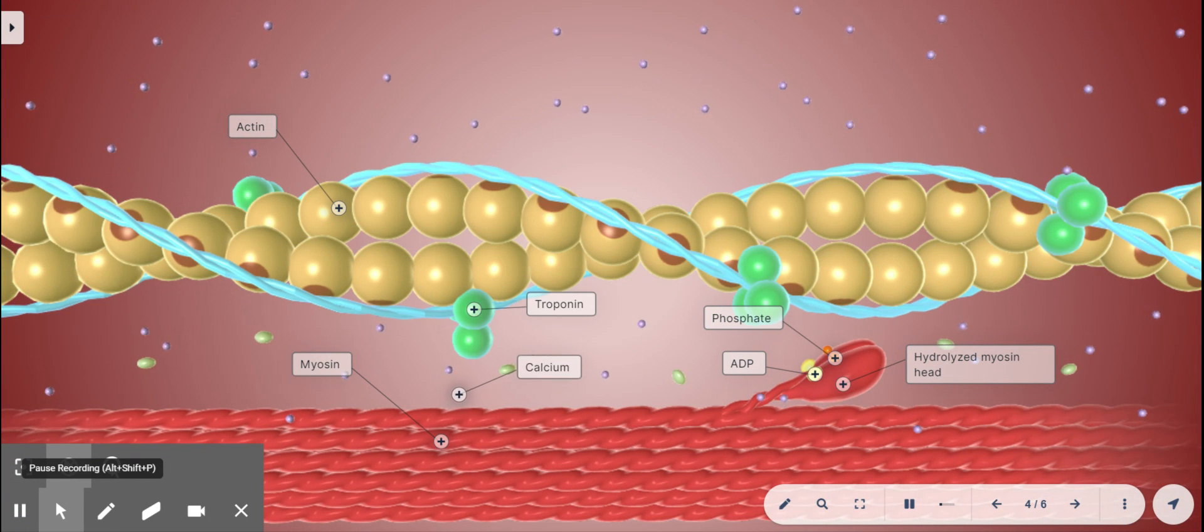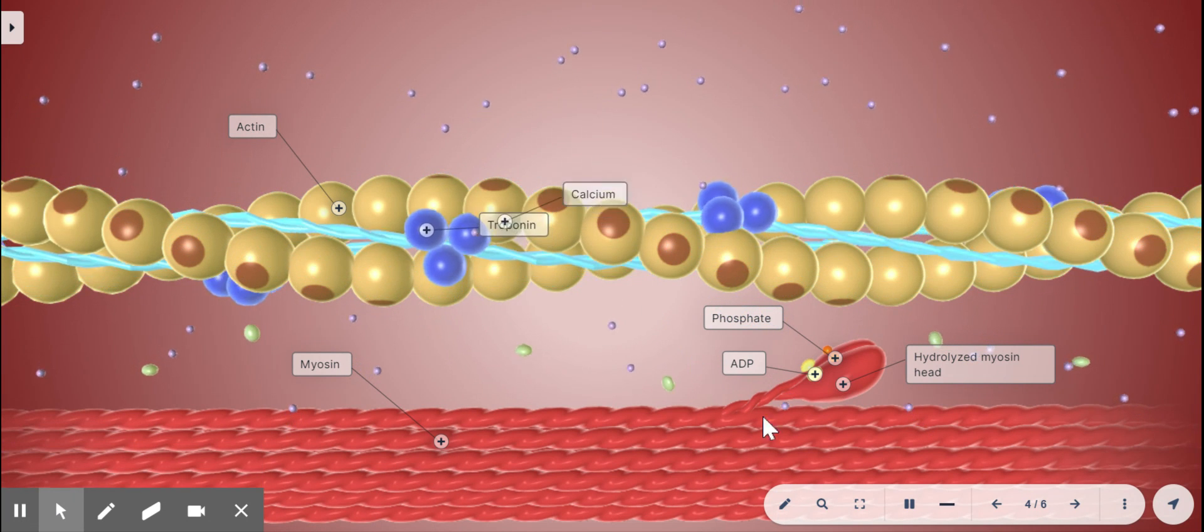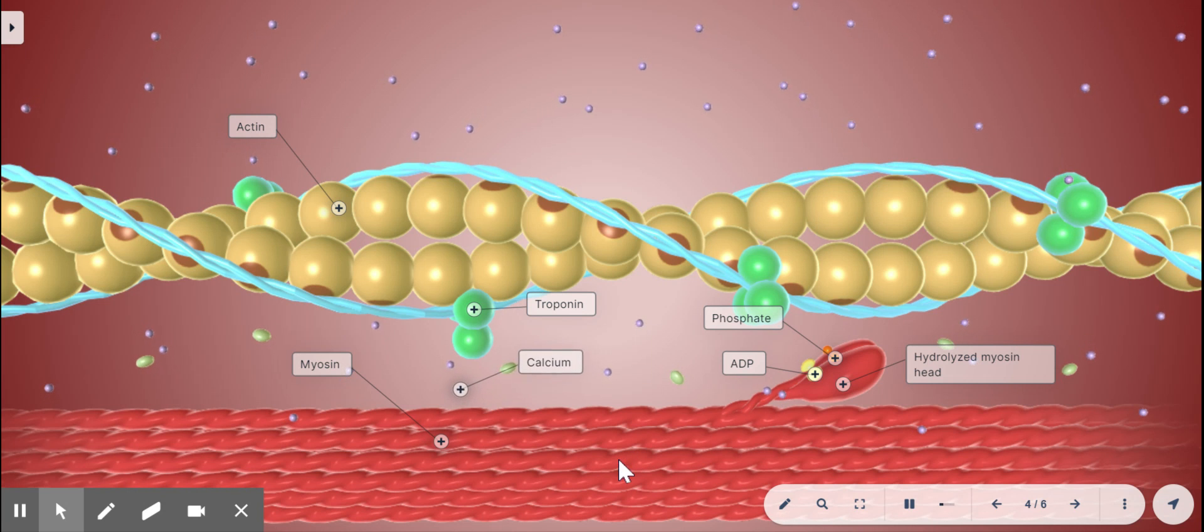Now we're zoomed deep into the cell and we're looking at a single thin filament made of actin, that's colored yellow. Below it down here is a neighboring thick filament made of myosin, it's colored red.